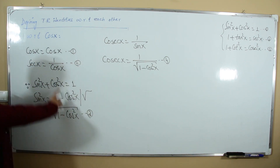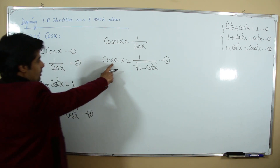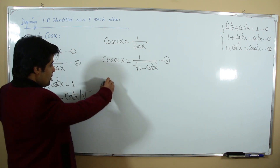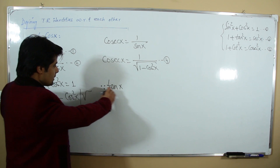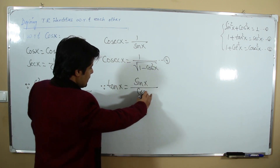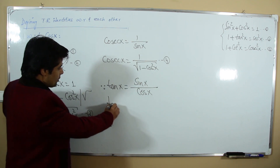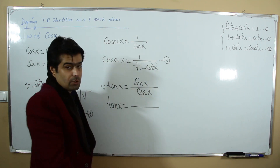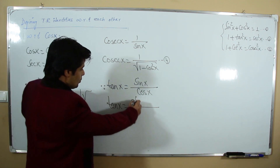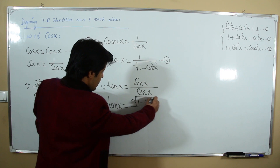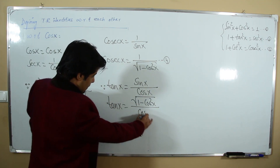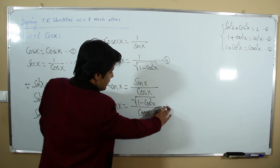We have defined cosine, secant, sine, and cosecant. For tangent: tan x = sin x / cos x. Substituting sine in terms of cosine: tan x = √(1 - cos²x) / cos x. This is our fifth relation.